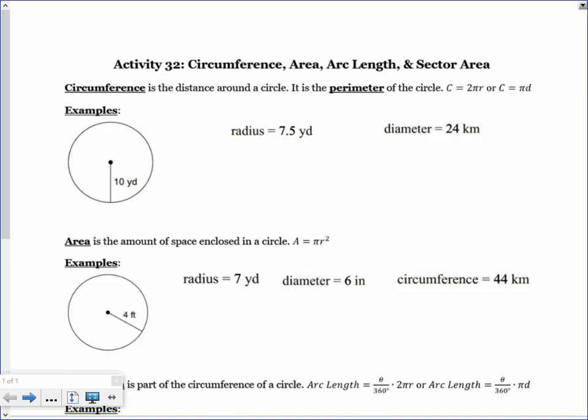All right, so today we're going to be looking at activity 32. We're going to be looking at circumference, area, arc length, and then sector area. All of these are looking still at a circle.